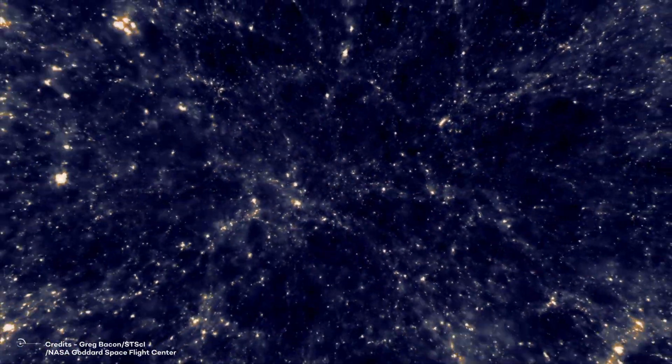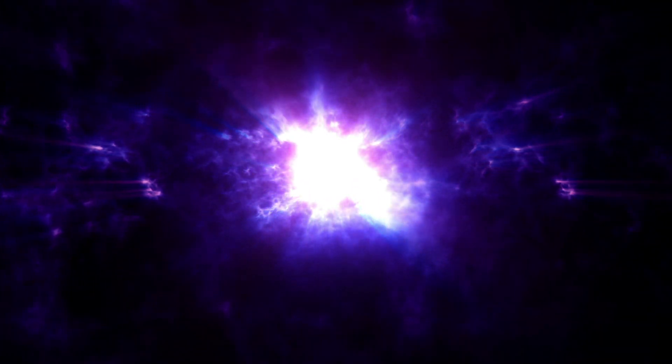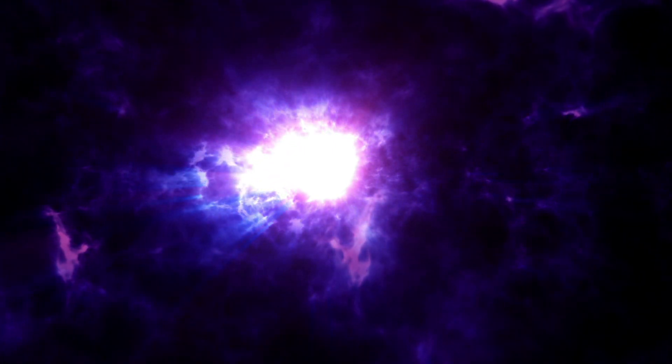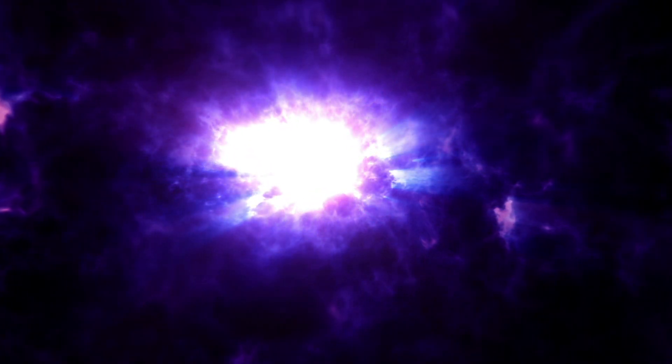The tendrils of gas also play a crucial role in regulating the growth of galaxies. As the gas flows into the galaxy, it can trigger the formation of new stars, but it can also drive powerful outflows of gas and dust that can prevent further star formation. These outflows can be so powerful that they expel gas from the galaxy altogether, halting its growth and preventing it from becoming too massive.